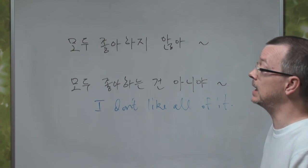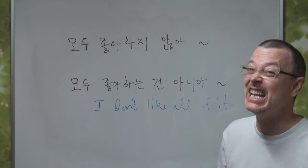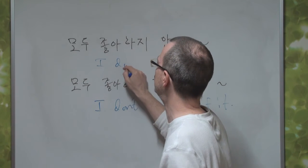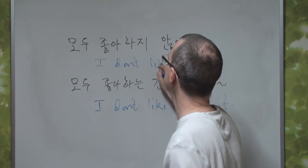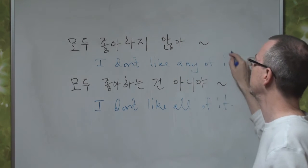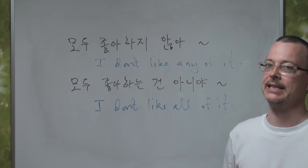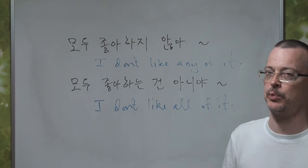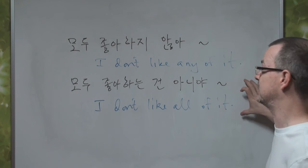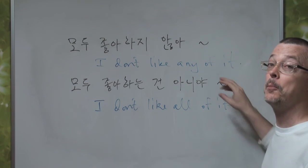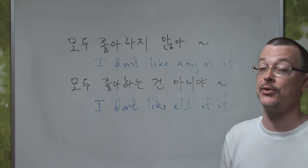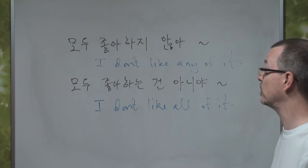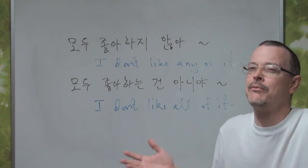그럼 모두 좋아하지 않아? That is 'I don't like any of it.' So these are two very useful expressions. This one is strong, this one is not as strong. Make sure that you use the correct version: 'I don't like any of it' versus 'I don't like all of it' — 'I don't like everything, just some of it.'